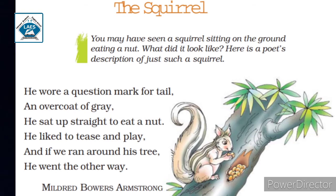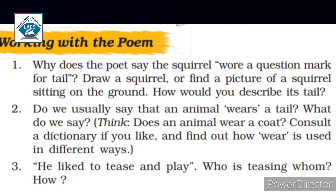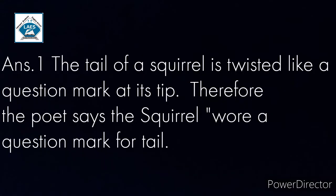Now you need to write the textual question answers. Question one: Why does the poet say the squirrel wore a question mark for the tail? Draw a squirrel or find a picture of a squirrel sitting on the ground. How would you describe its tail? Answer: The tail of a squirrel is twisted like a question mark at its tip. Therefore the poet says the squirrel wore a question mark for tail.